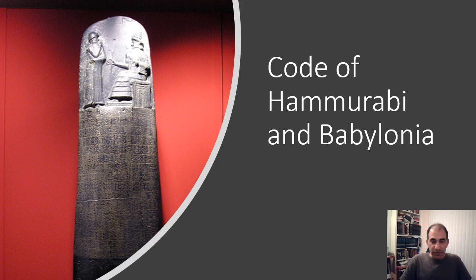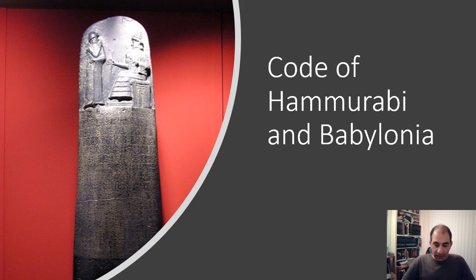I was going to make this maybe an audio lecture, but I decided it's going to be really short. Everything else is video so we'll just stay with the same format. What I want to do with this brief lecture is talk about the Code of Hammurabi and Babylonia. As a quick review, last time we discussed a lot of the pre-civilization and civilization time periods, and the characteristics of civilization.